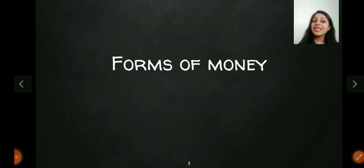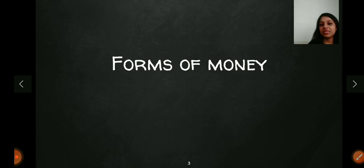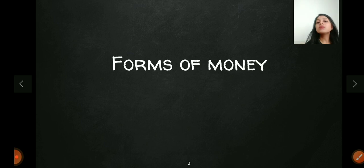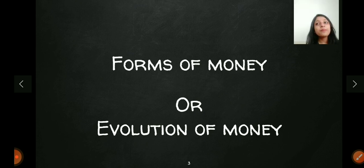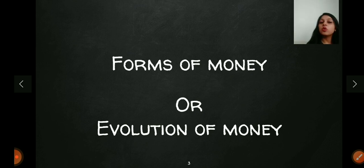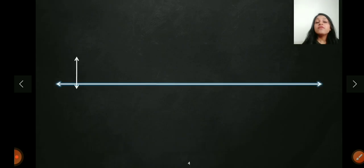Next, what are the forms of money? There are many things that are accepted as a medium of exchange or a measure of value. We can also understand this as the evolution of money — how money has evolved over time. Let's see one by one what were the various things accepted as a medium of exchange and measure of value over the past years.